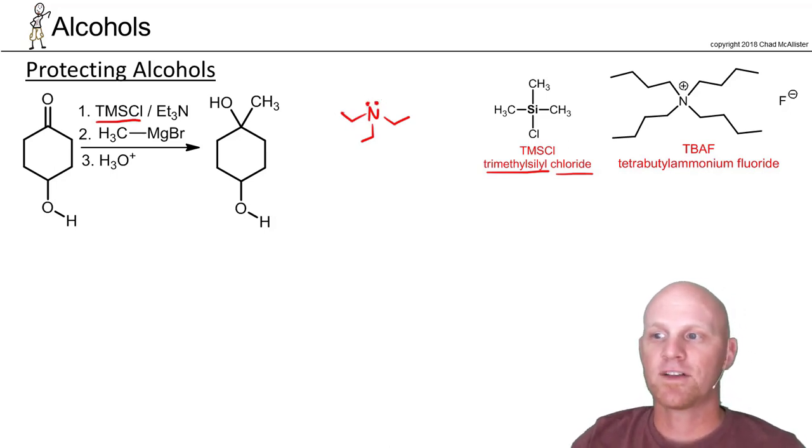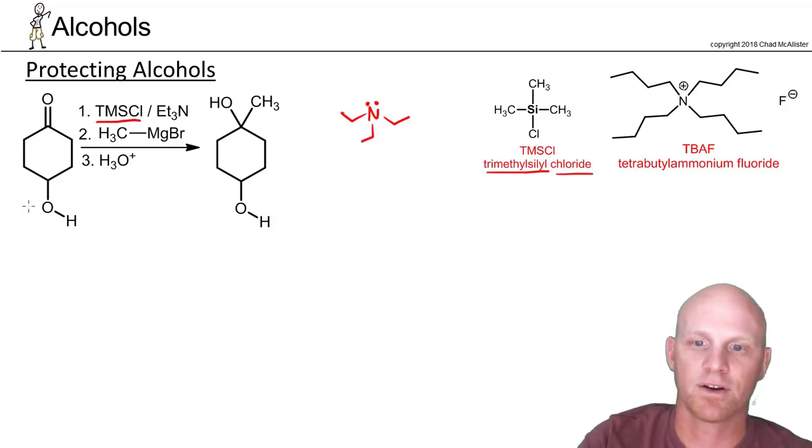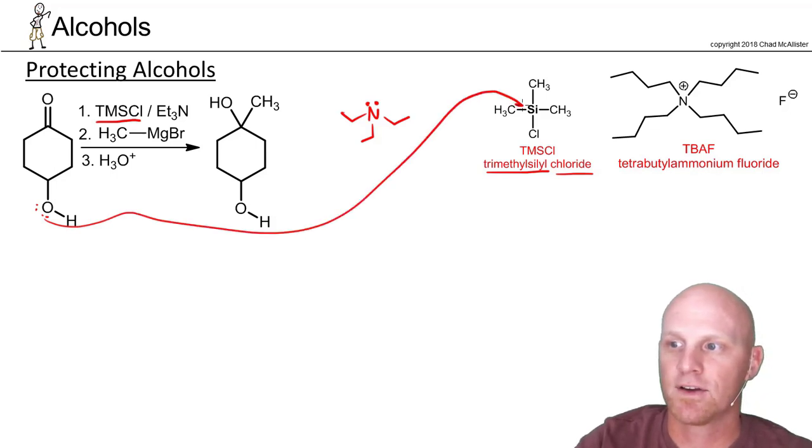And that's what we're dealing with in terms of the protection here. And essentially what's going to happen here is our alcohol is going to come in and attack the silicon atom and kick off the chlorine—so a substitution reaction.